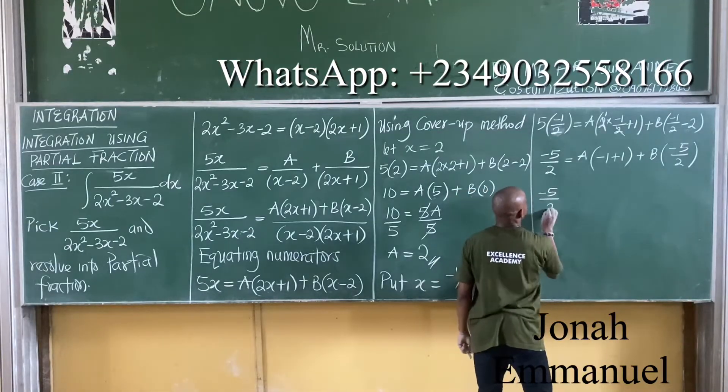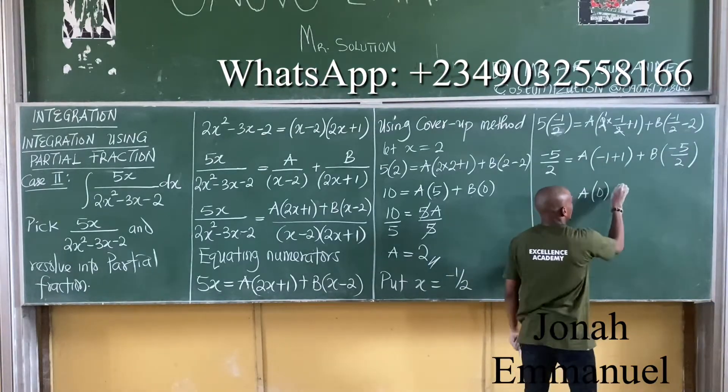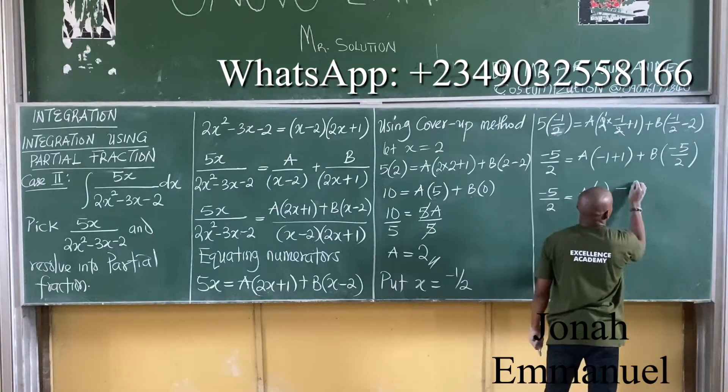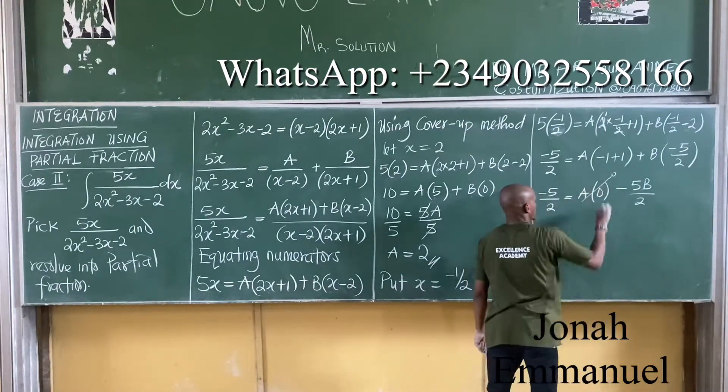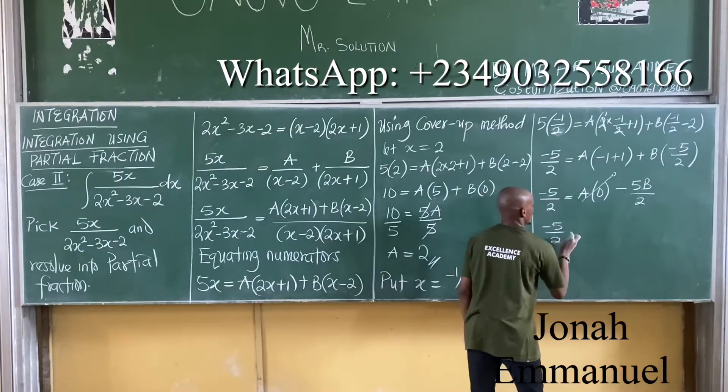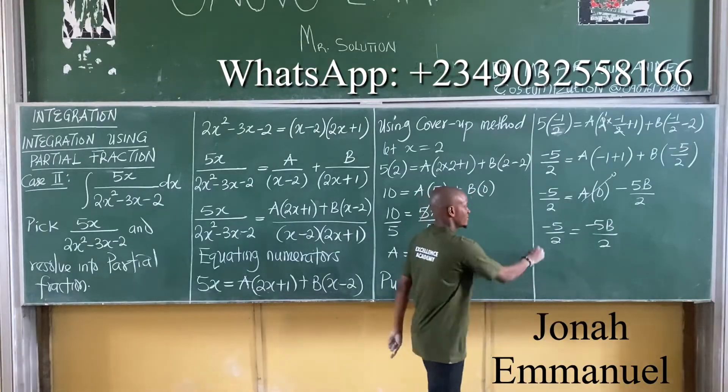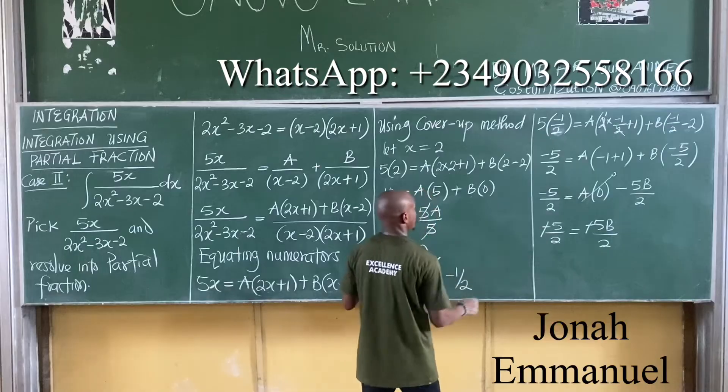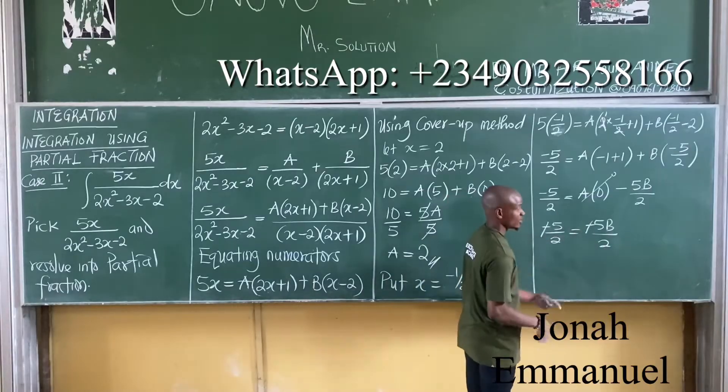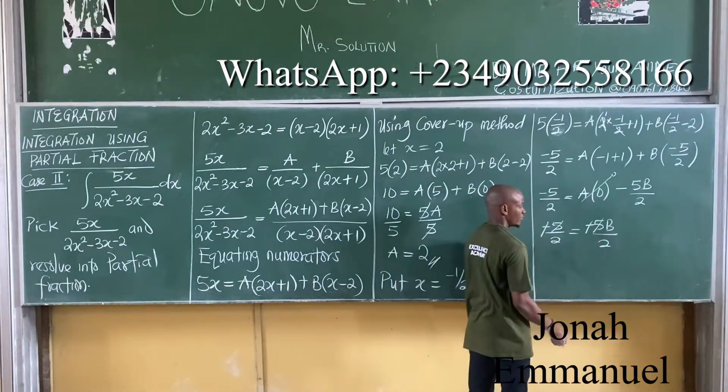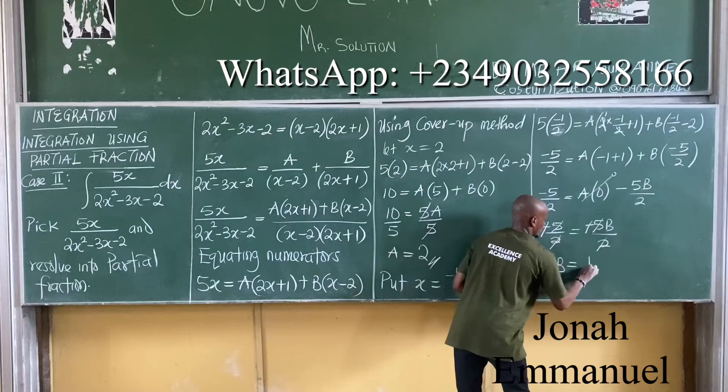I'm having minus 5 over 2 is equal to A into minus 1 plus 1, that's 0, plus minus 5 times B, which is minus 5B all over 2. Just by mathematical sense, minus times minus. If I have the same term on both sides and they are multiplying, they can cancel out. So minus minus is positive, 5 times 5 cancels, 2 times 2 cancels. From here now, B is equal to 1.